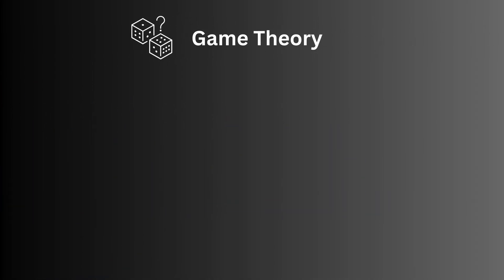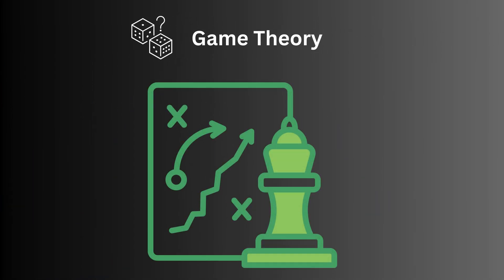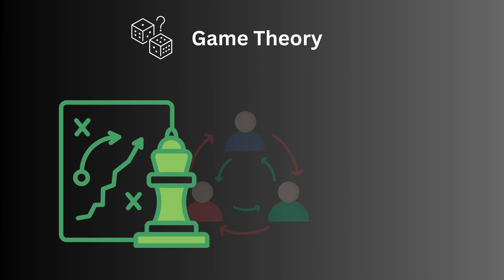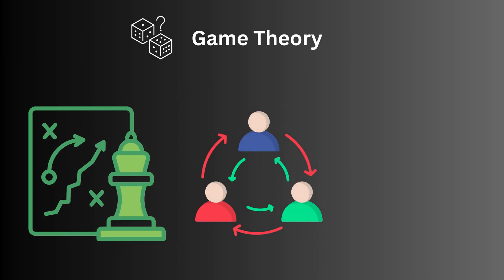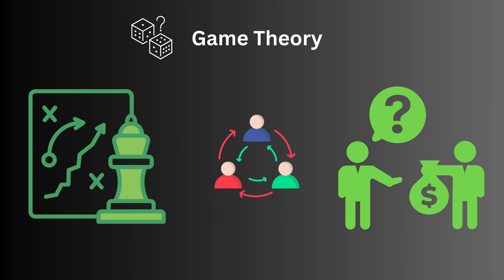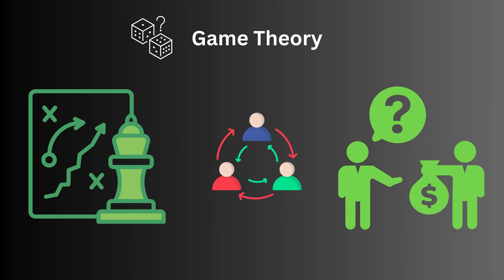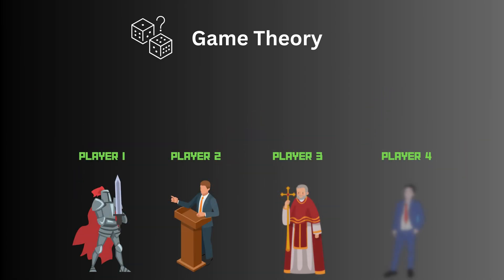In game theory, we analyze situations where players make decisions that are interdependent, often trying to anticipate the moves of others to maximize their own payoff. Here, the sellsword, the president, the pope, and the tycoon are all players in a high-stakes game where power and survival are the ultimate prizes.